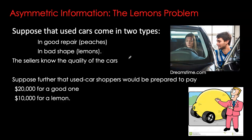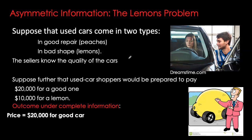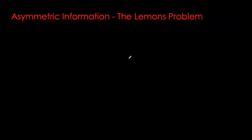Suppose used car buyers are prepared to pay twenty thousand dollars for a good quality peach and ten thousand dollars for a lemon. If there is complete information — no information imbalance — the problem is simple: we have two separate markets for these two types of cars. Exchange occurs in these segmented markets, so we have an equilibrium price of twenty thousand dollars for a peach and ten thousand dollars for a lemon. As a buyer, you pay whatever is the true value of that particular car.